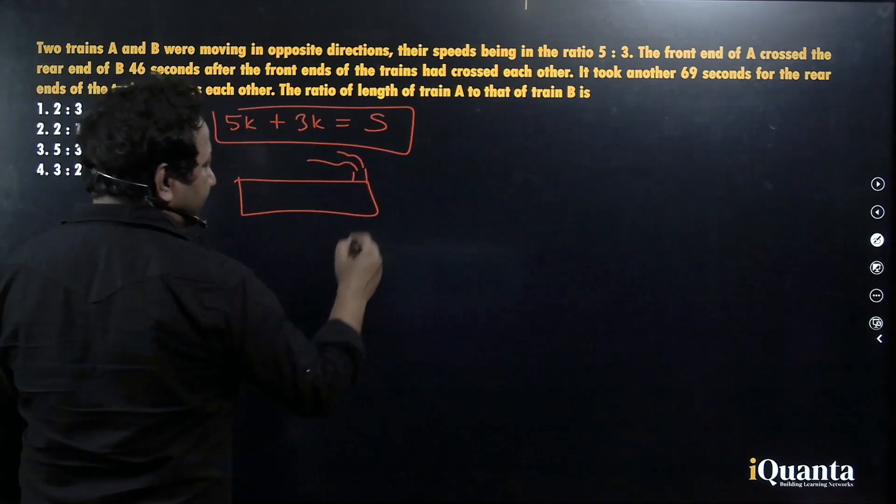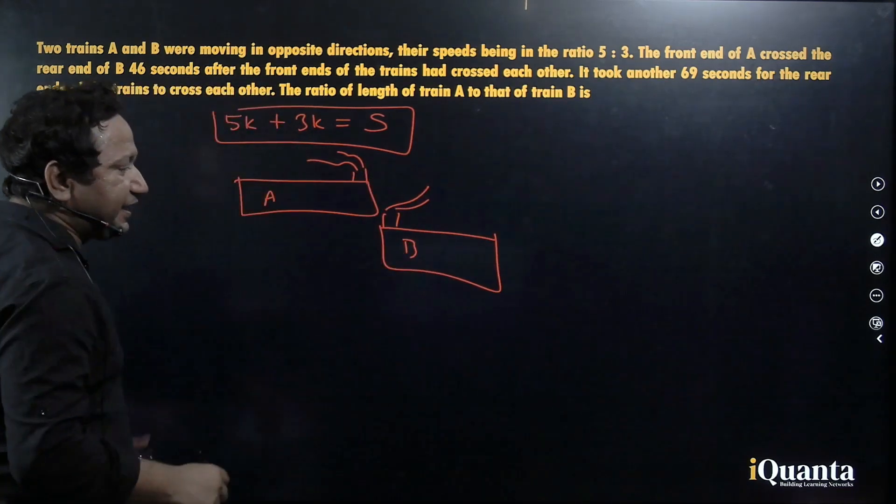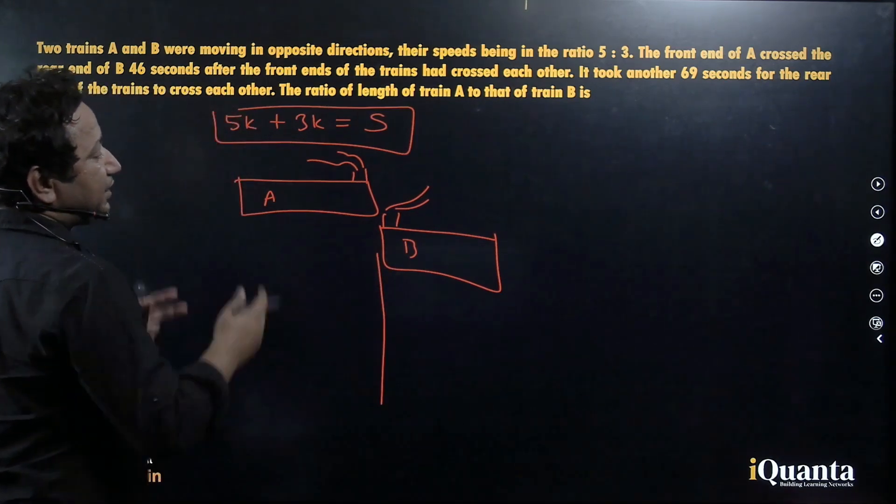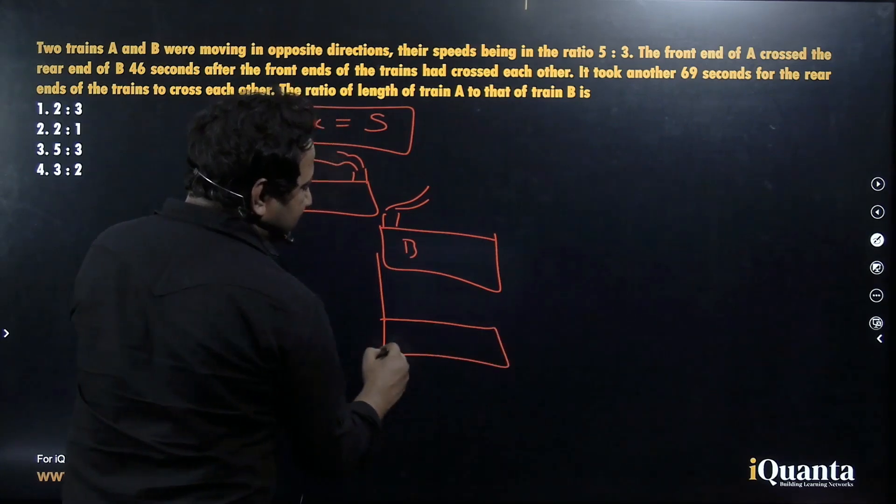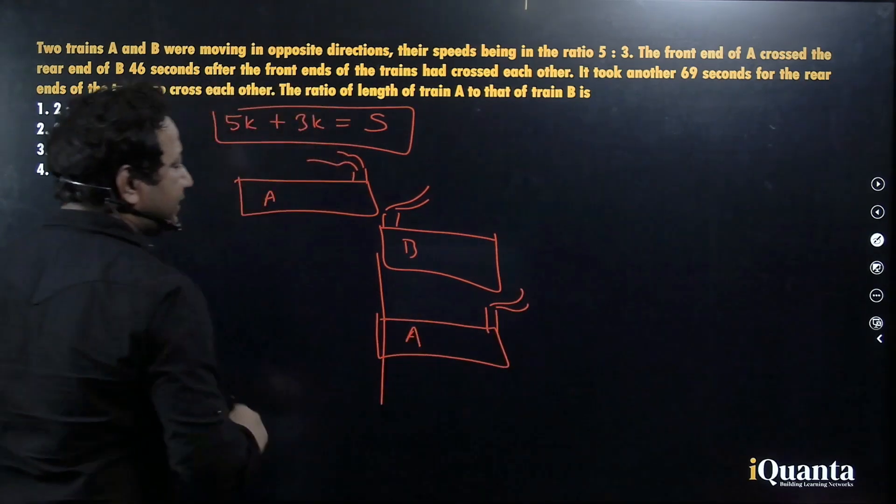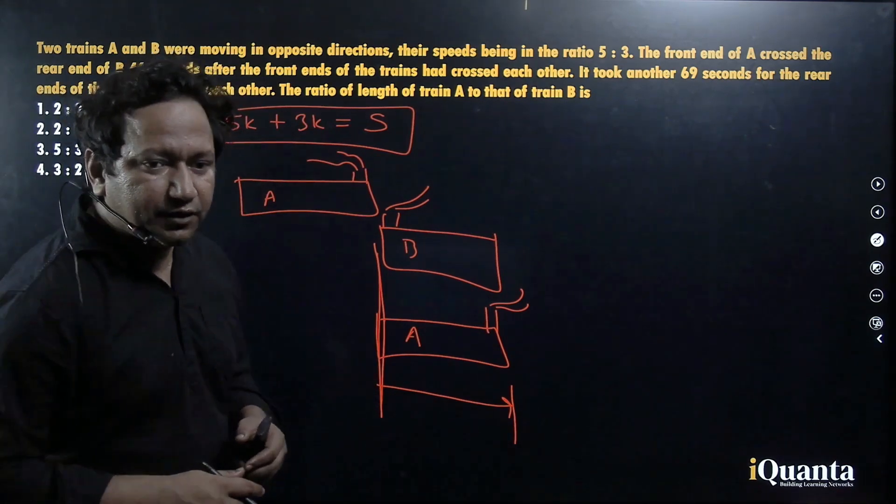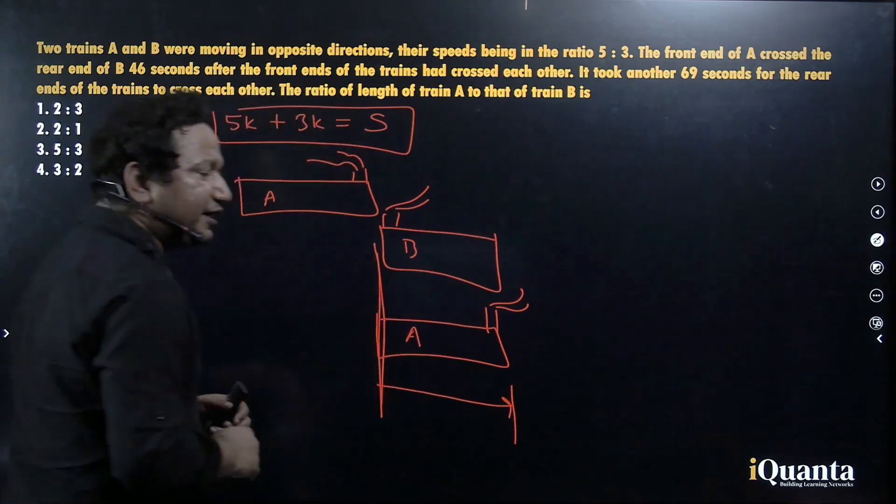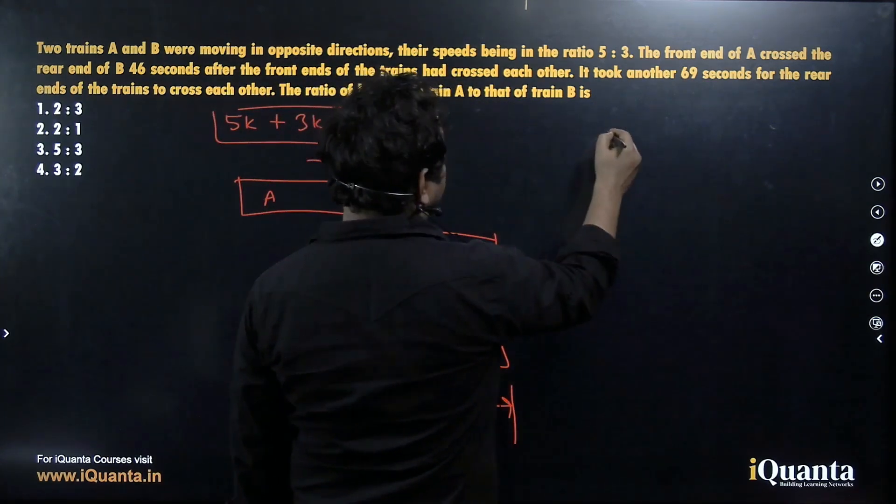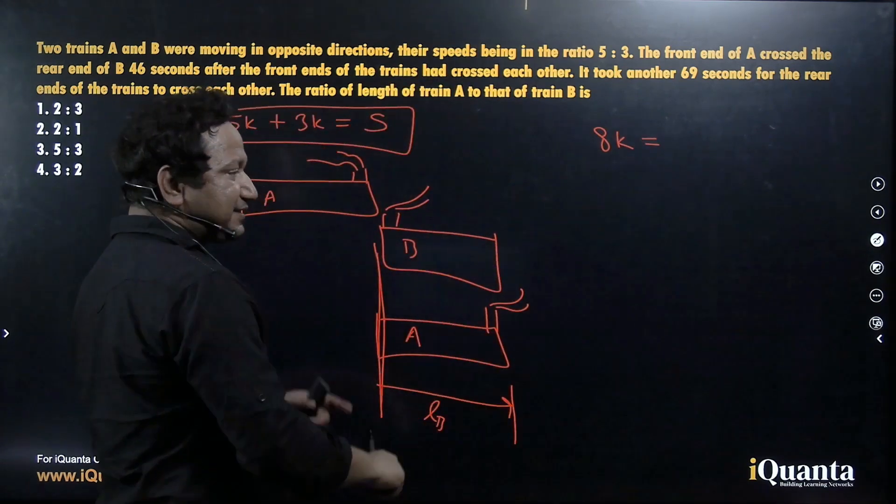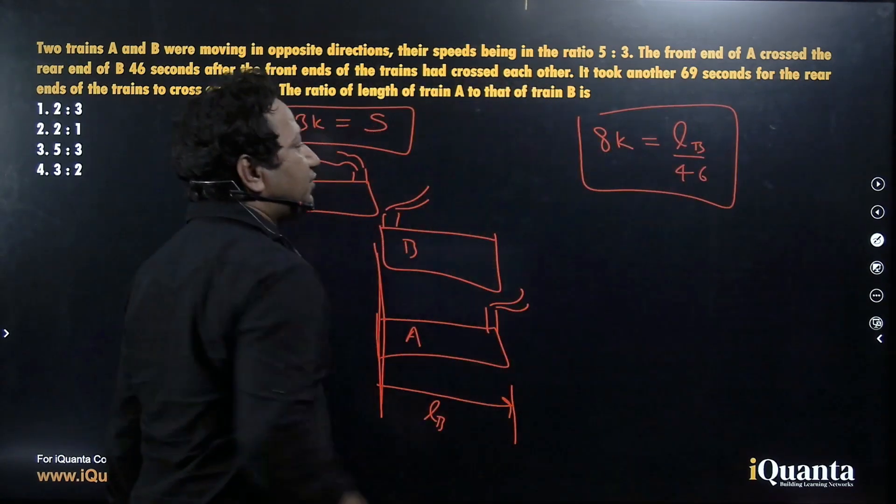So if I make the trains like this, the front end is denoted by the smoke. This is train A and let this be train B. As you can see, the front ends are crossing each other. From this point, front end of train A crosses rear end of train B. From this position to this position, how much distance has train A travelled? It is basically the distance, the length of the train B. Let the length be LB. So now I can say that speed, that is 5K plus 3K or 8K, the relative speed is equal to distance travelled, that is length of train B divided by time, that is 46 seconds. So this is the first equation that is very important for us.